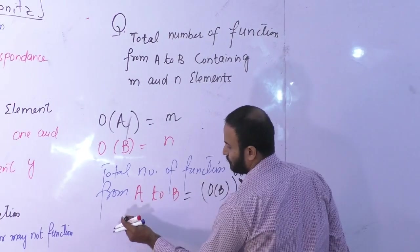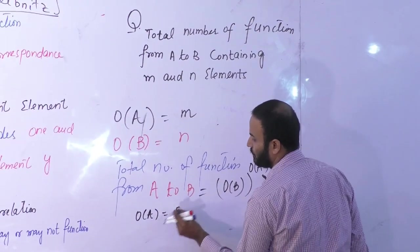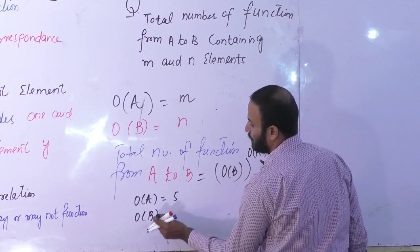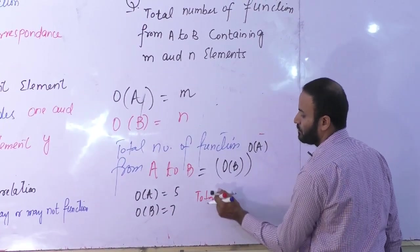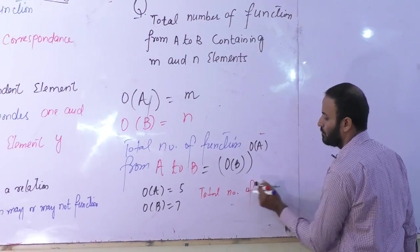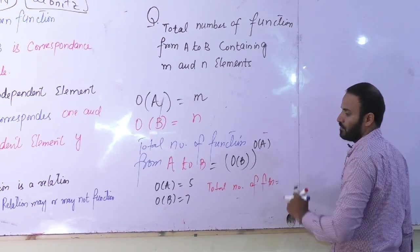If we have a sample where order of A is 5 and order of B is 7, then total number of functions will be 7 to the power 5.